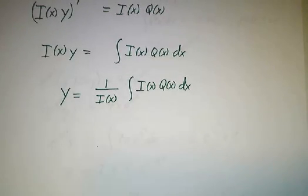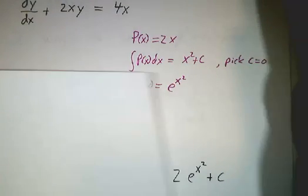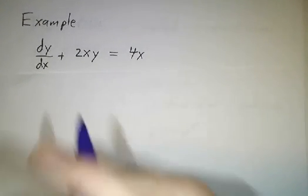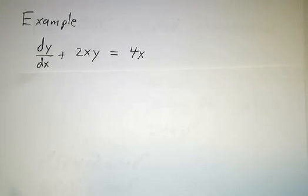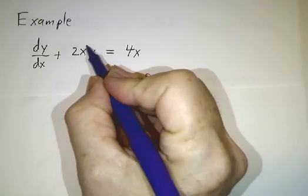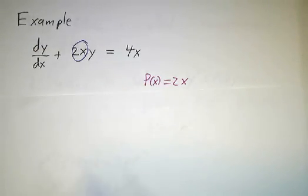So let's work an example to see how that works. Suppose we want dy dx plus 2xy equals 4x. In this case, p is 2x. This is p. And q is 4x.